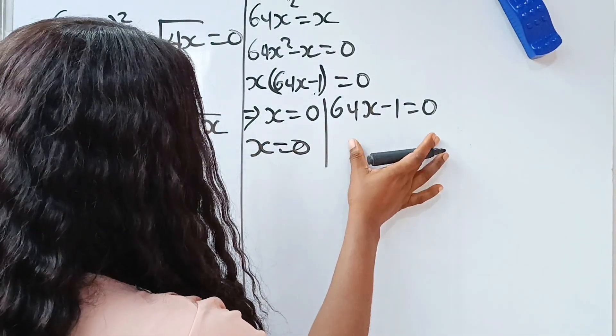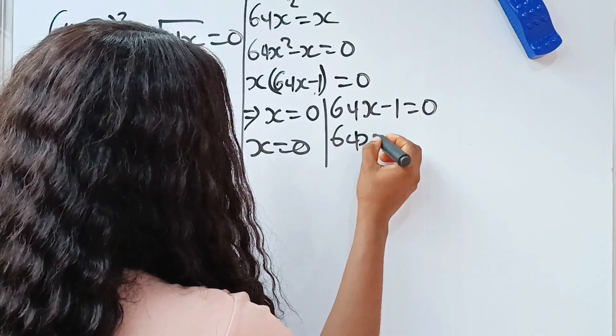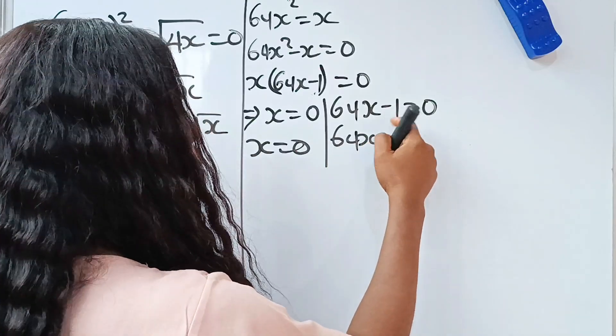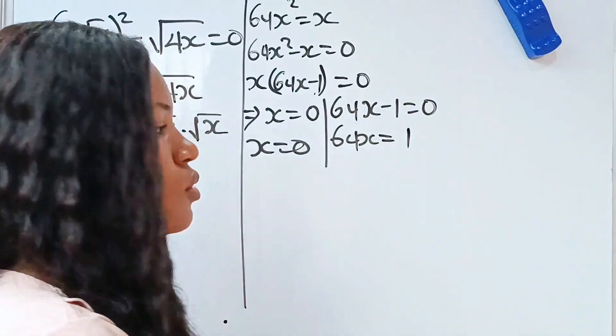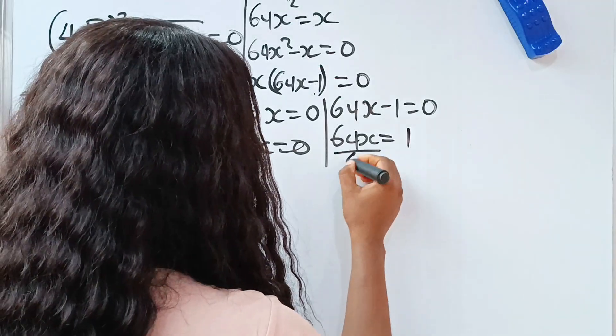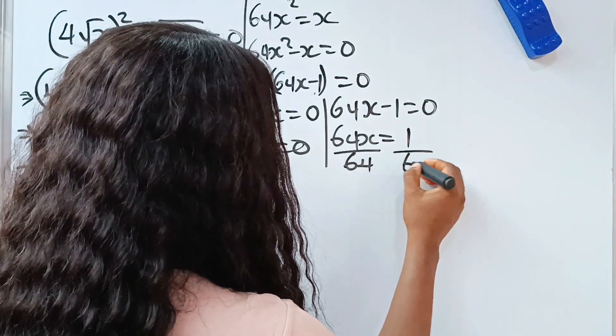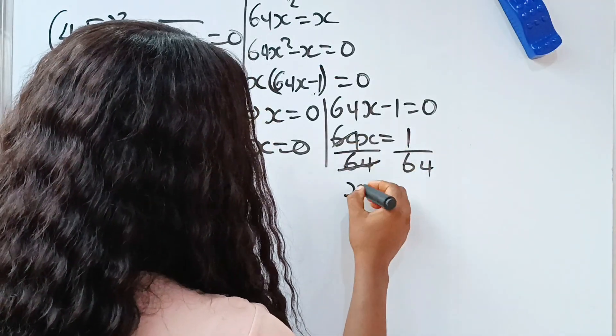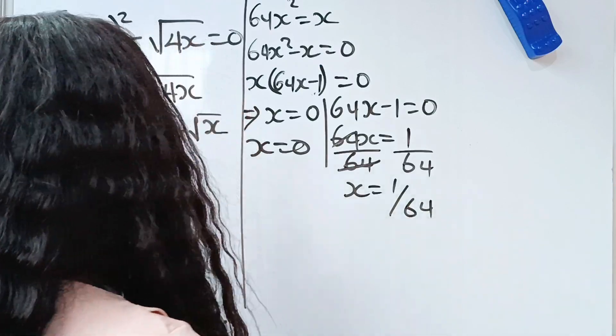So, our x is equal to 0 or here, 64x is equal to minus 1 we cross to become plus 1. So, let's divide both sides of this equation by 64 and we have that x is equal to 1 over 64.